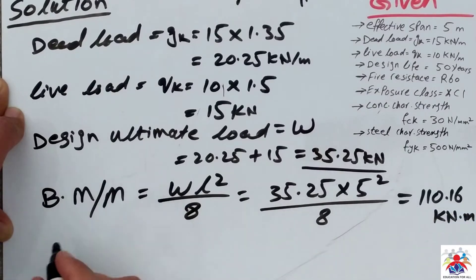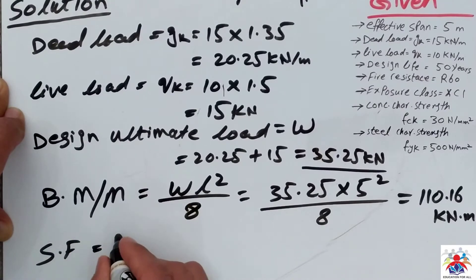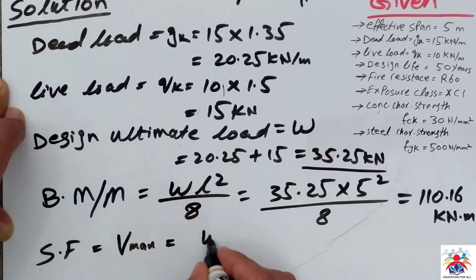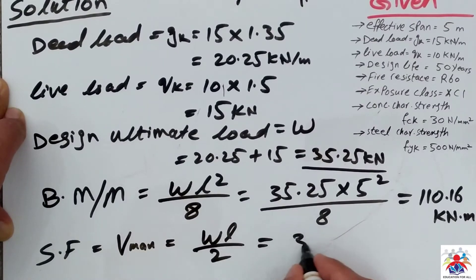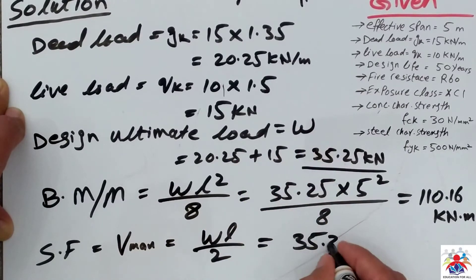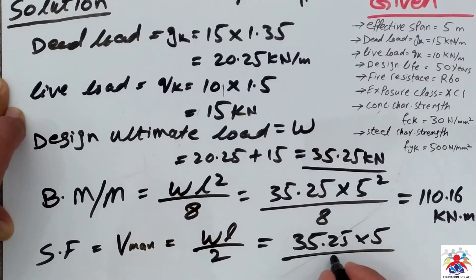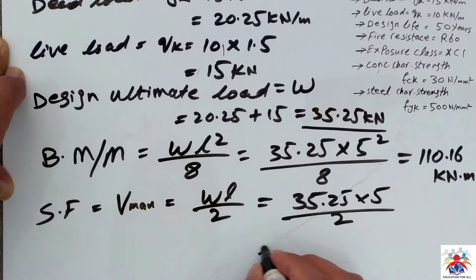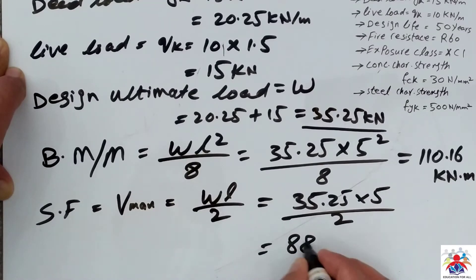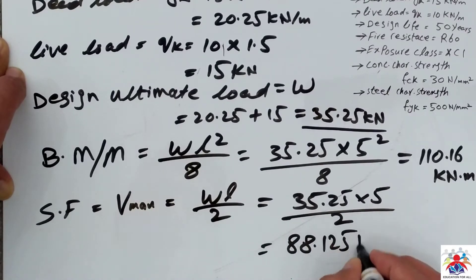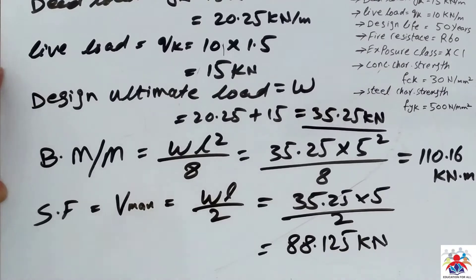Now we have to calculate shear force, which can be expressed as Vmax or just V. The formula is w·L over 2. Using our design ultimate load of 35.25 multiplied by 5 divided by 2, the answer we get is 88.125 kilonewtons.